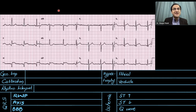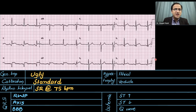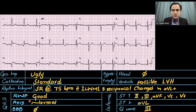Pause the video and try to solve this ECG yourself using the six-step method. General impression: ugly rhythm. Calibration marker has been cut off — we'll assume standard calibration. Rate: between the RR interval we have about four large boxes, giving 75 beats per minute. Sinus rhythm at 75 beats per minute. R-wave progression: V1 and V2 negatively deflected, V5 and V6 positively deflected — normal. Axis: leads 1 and AVF both pointing upward — normal axis.